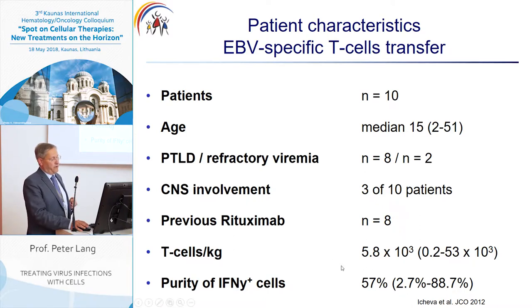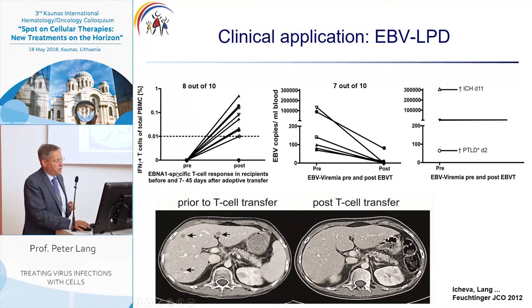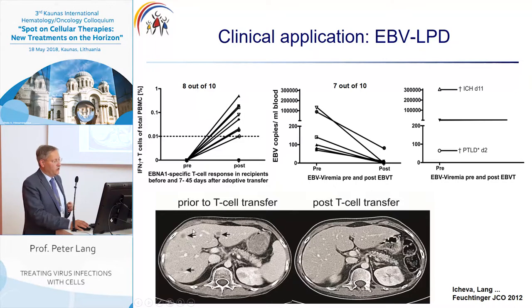We infused 5,800 T cells per kg body weight with a purity of about 60%. Eight out of ten patients showed in vivo proliferation. Seven out of ten could get rid of the EBV viremia. Three patients failed and unfortunately died. Additionally, we could observe that EBV-associated lymphomas in the liver disappeared completely after the transfer of specific T cells.